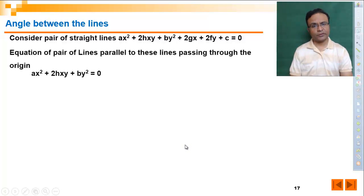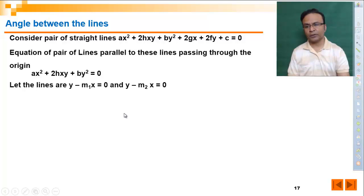The equation is given by ax square plus 2hxy plus by square. This pair of straight lines are parallel to this pair of straight lines and passing through origin. The component lines are y minus m1x equals 0 and y minus m2x equals 0. So we have already seen that m1m2 equals a upon b and m1 plus m2 is minus 2h upon b.